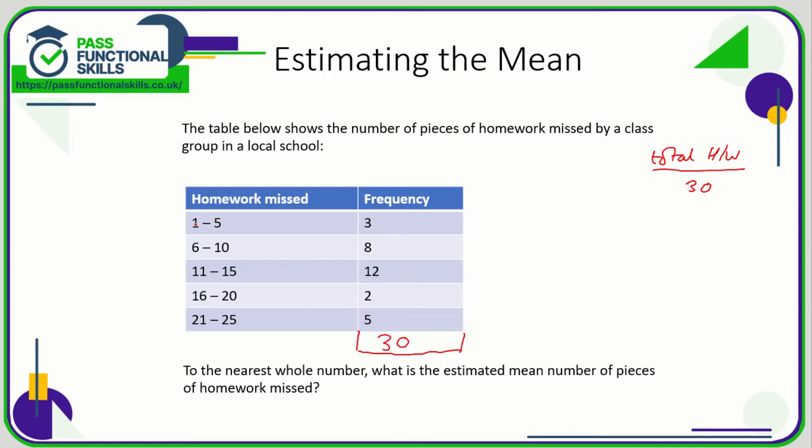So I'm going to create a new column here called the midpoint. What's the midpoint of one and five? Three. Six and ten, eight. Eleven and fifteen, thirteen. Sixteen and twenty, eighteen. Twenty-one and twenty-five is twenty-three.